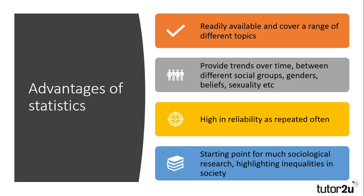They are also highly reliable, as they are repeated often. For example, crime statistics are published quarterly, as are statistics on unemployment and the economy. Consequently, they can become a starting point for lots of sociological research, particularly in examining inequality in contemporary society.